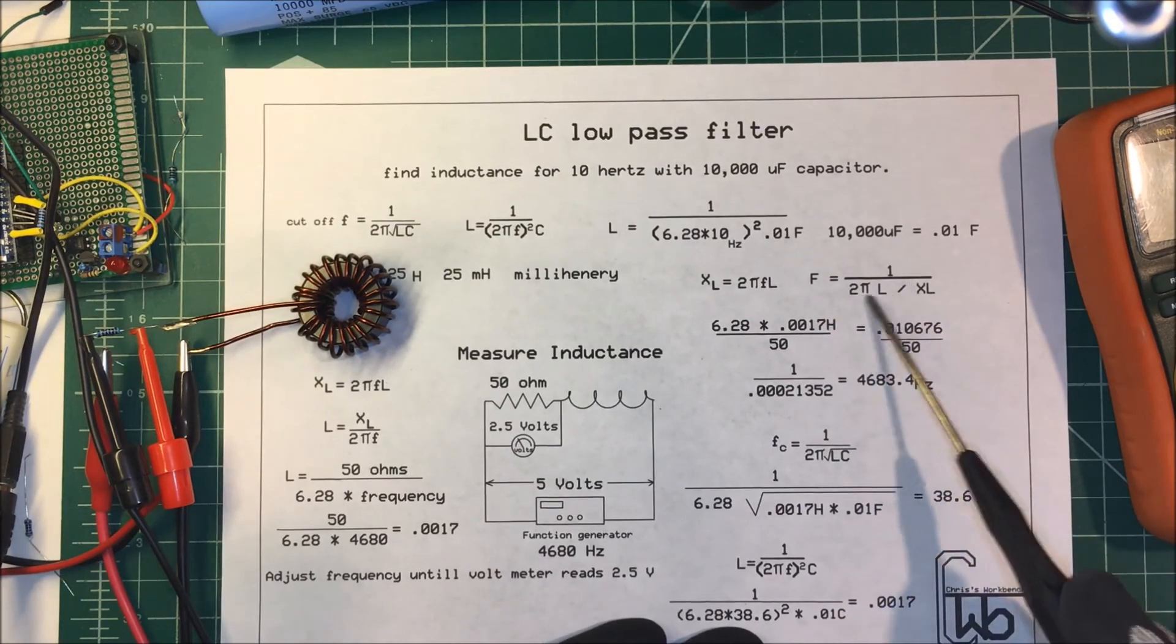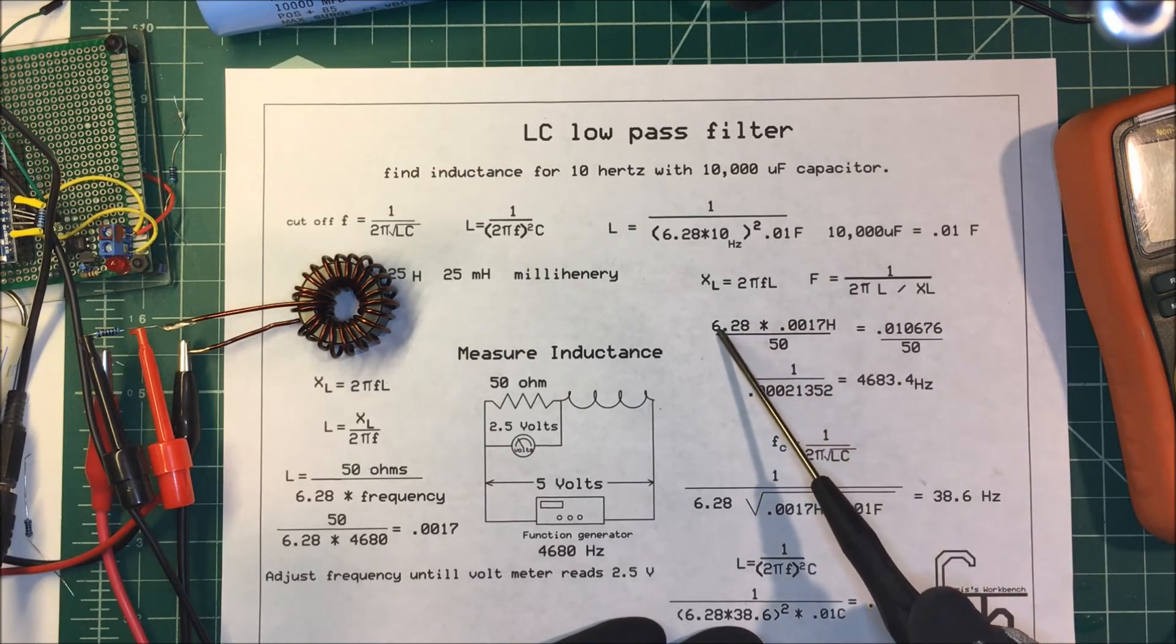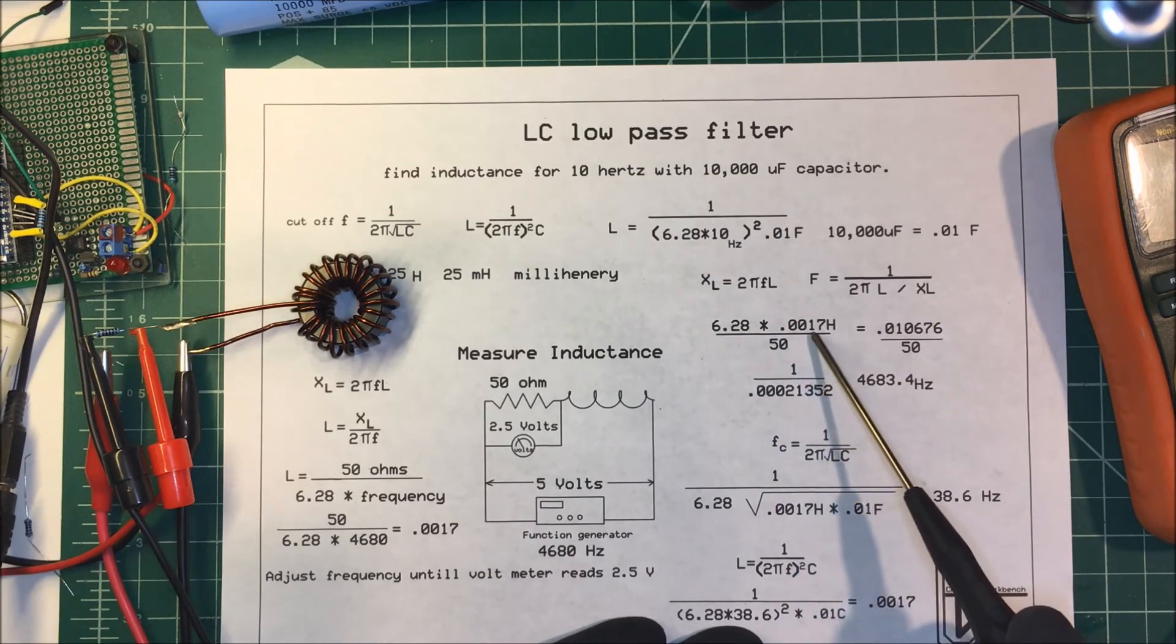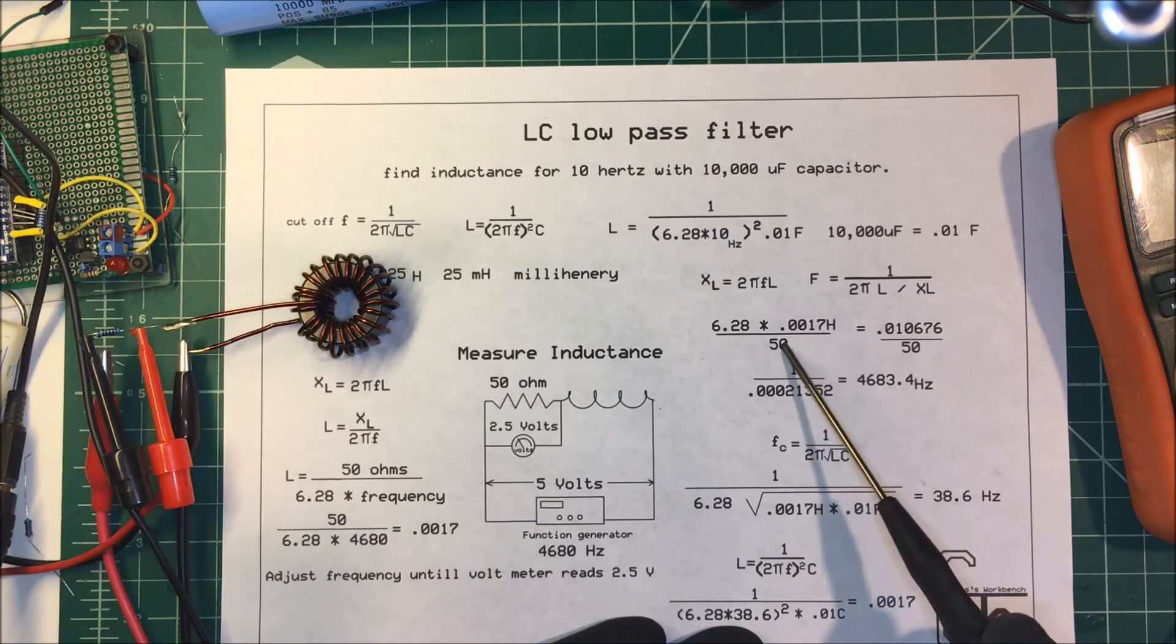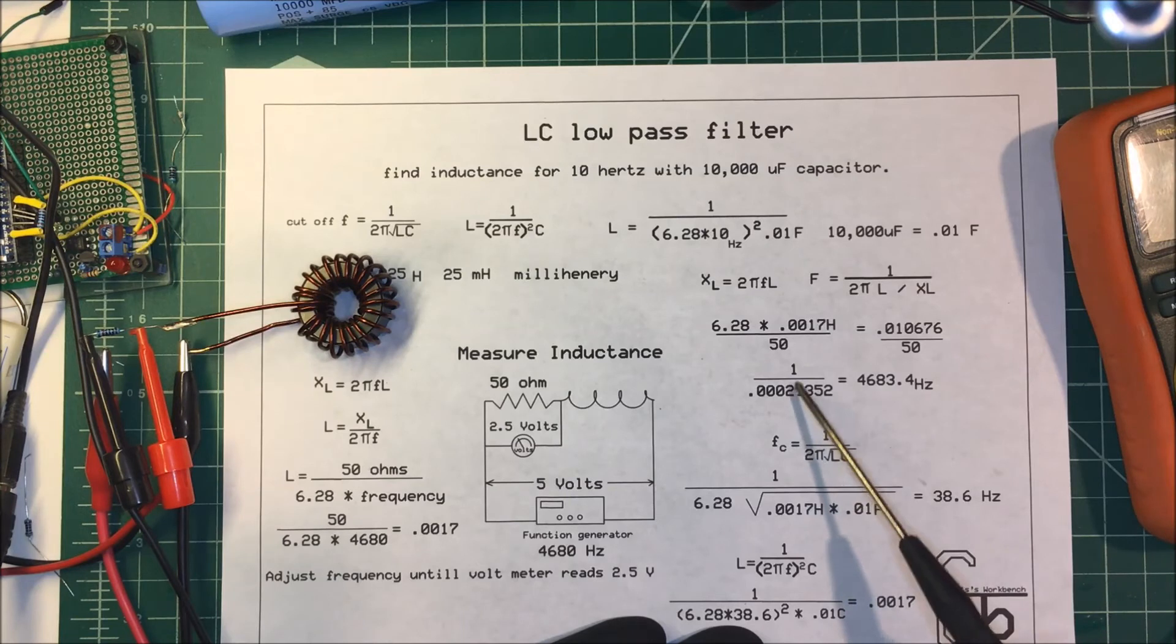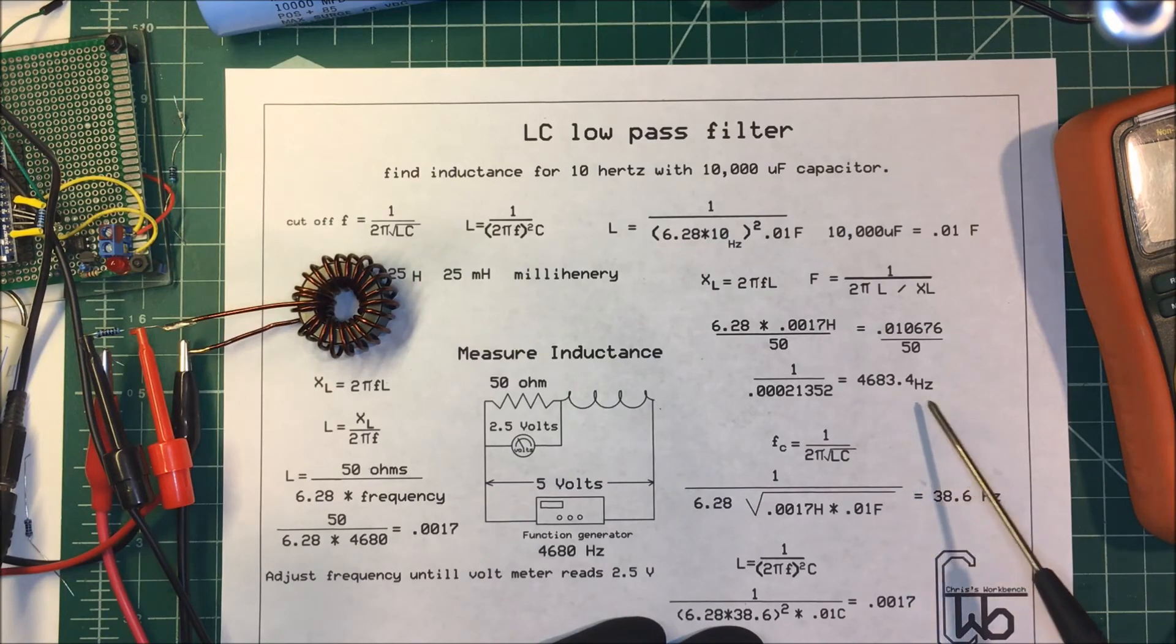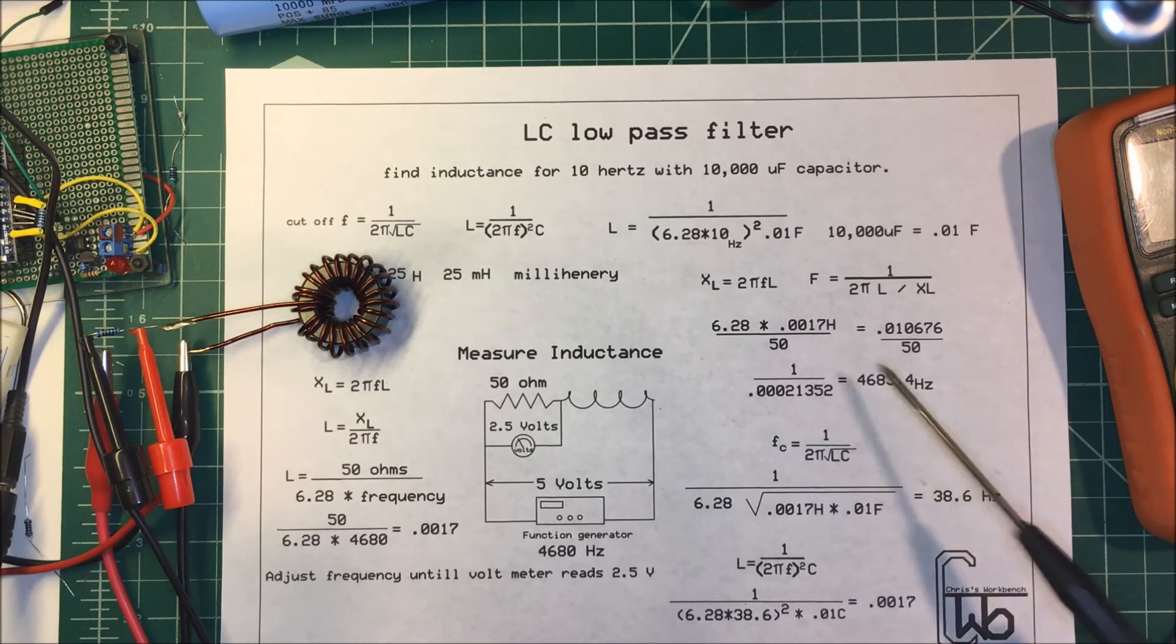To find the frequency, we take 1 over 2π L divided by the inductive reactance. So it's 6.28 times our henrys, divide that by 50, then divide that whole thing into 1, and that comes out to 4,683 hertz, which is what we got on our meter. Just a double check there.